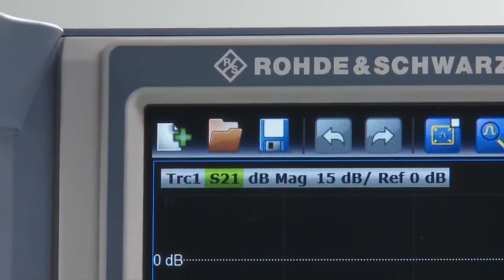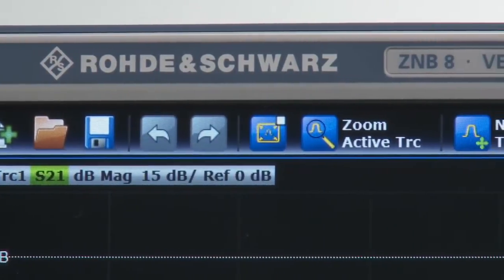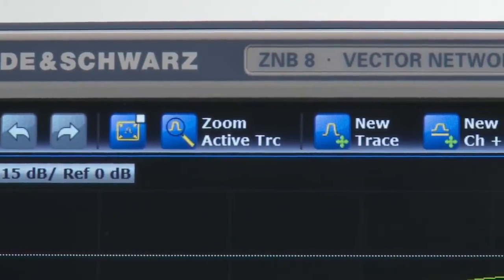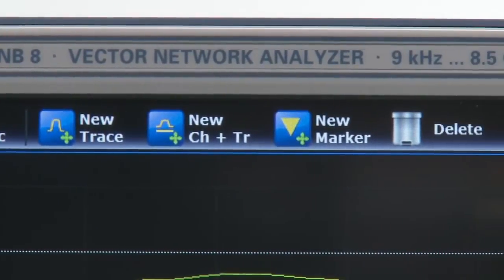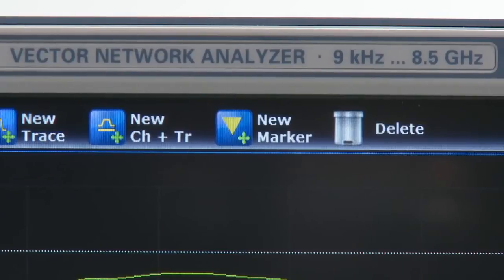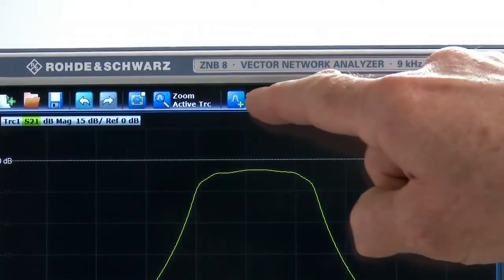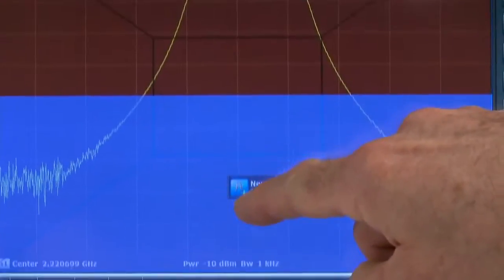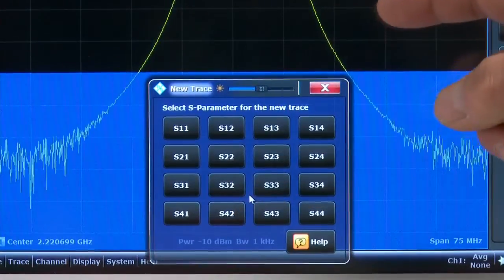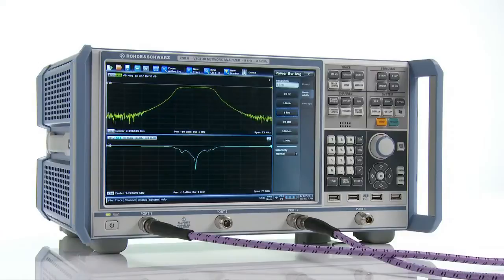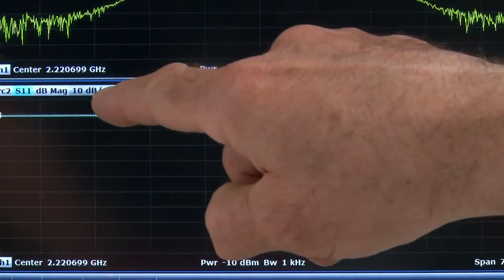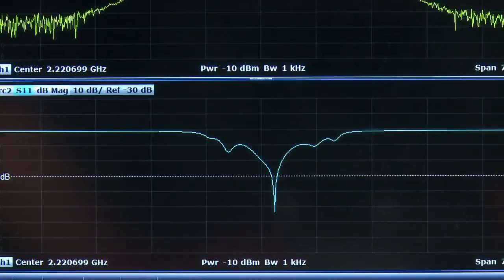The ZNB has another soft tool, the toolbar, that gives fast and easy access to frequently used functions. Need another measurement trace, for example matching, which is S11? Just tap on the corresponding icon and drag the window where you want. A double tap on the trace info bar auto-scales the new trace and analysis can begin.